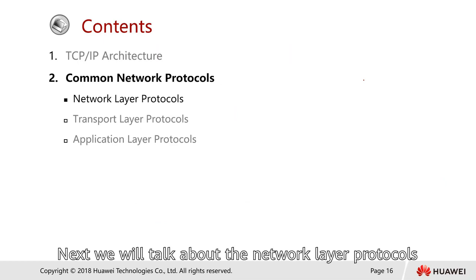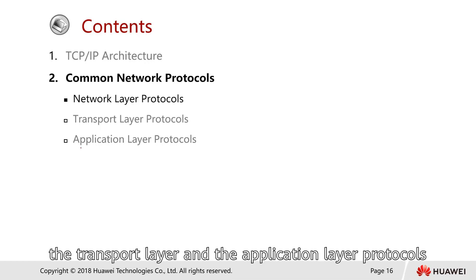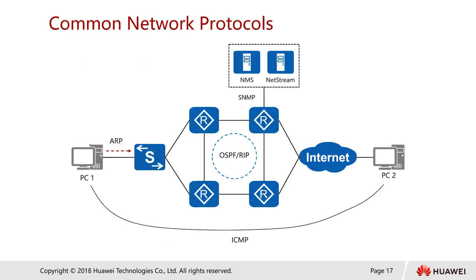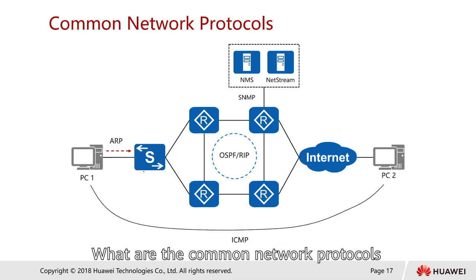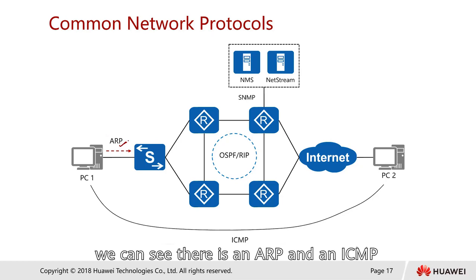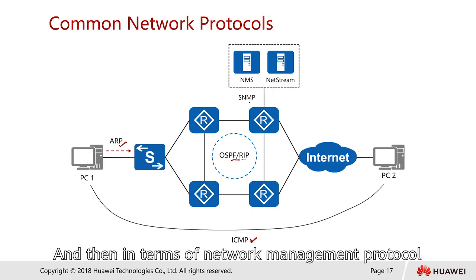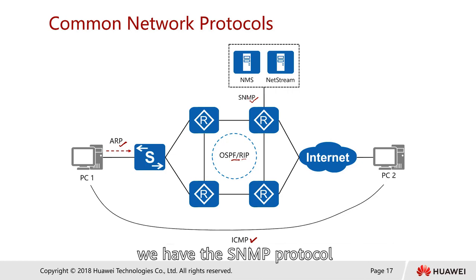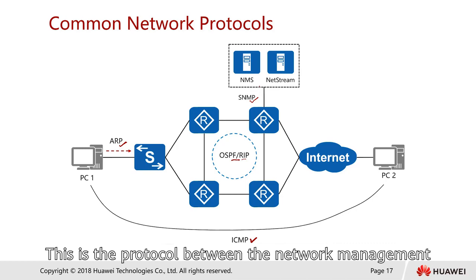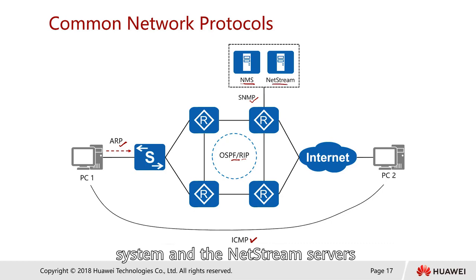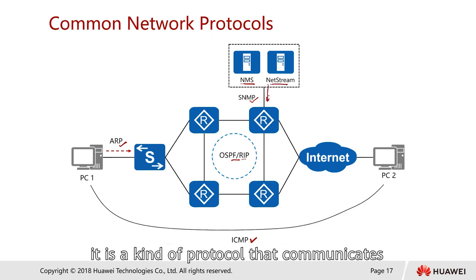Next we will talk about the network layer protocols, and after that we talk about transport and also the application layer. So what are the common network protocols? In this example we can see there's ARP and ICMP. In terms of routing protocols we have OSPF and RIP, and in terms of network management protocol we have something called SNMP - the protocol between the network management system and the network stream servers.